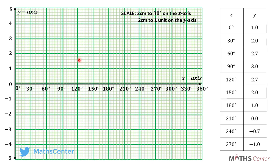We now have our x and y axes numbered so we can plot our values. The first point is 0 degrees, 1.0. The next is 30 degrees, 2.0. Then 60 degrees, 2.7. Then 90 degrees, 3.0 on the y axis. The next is 120 degrees, 2.7. Then 150 degrees, 2.0 on the y axis.